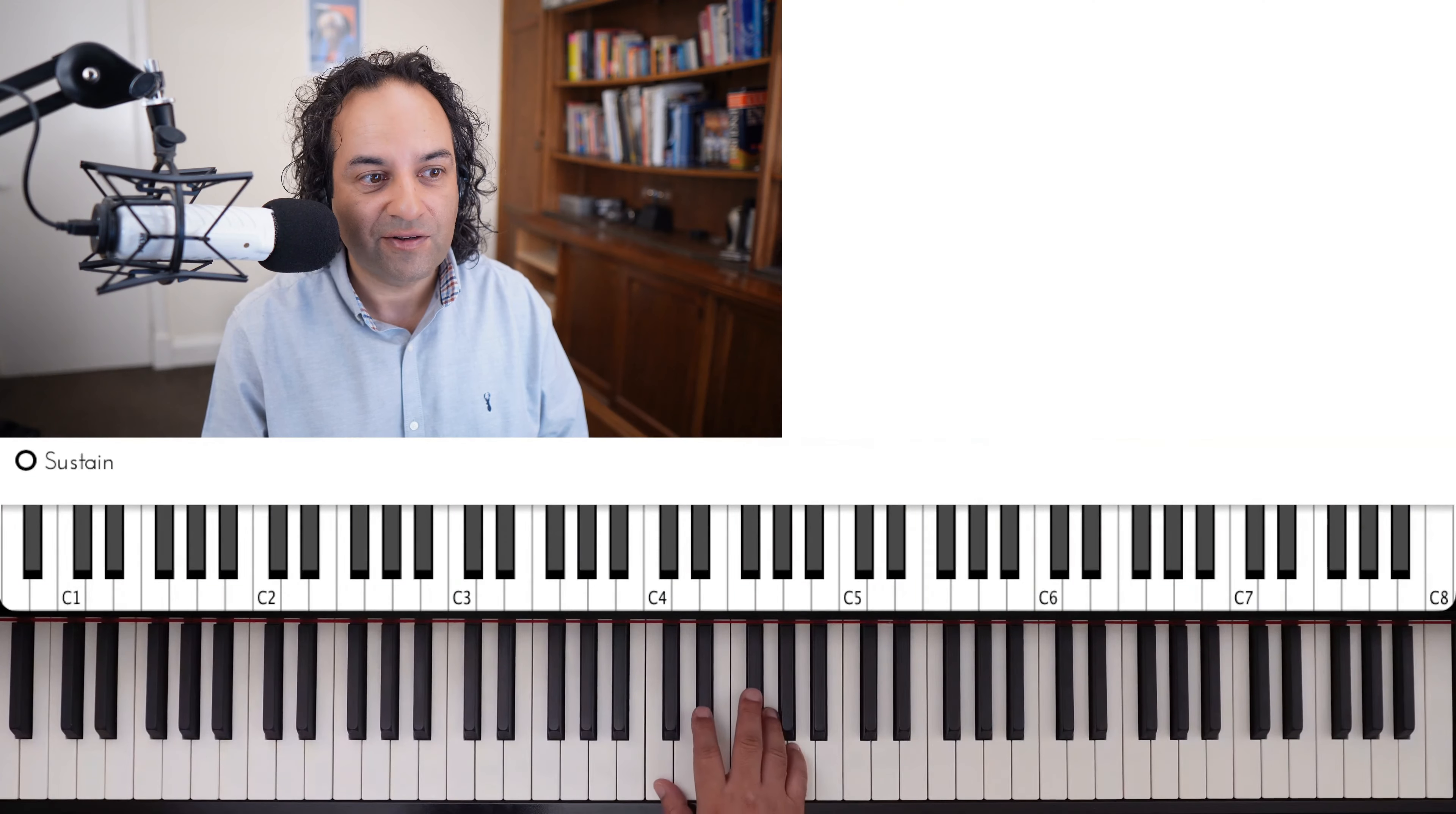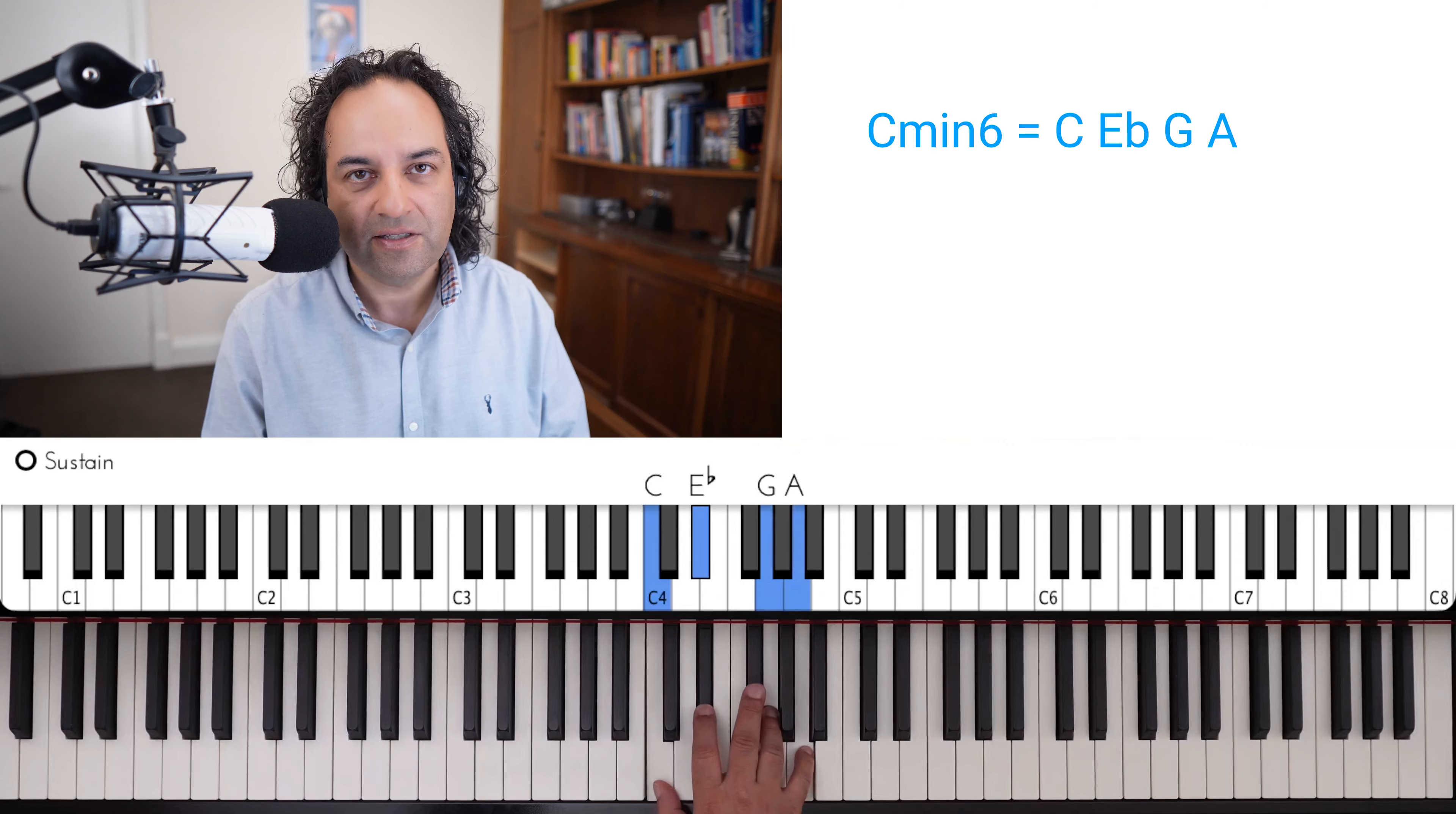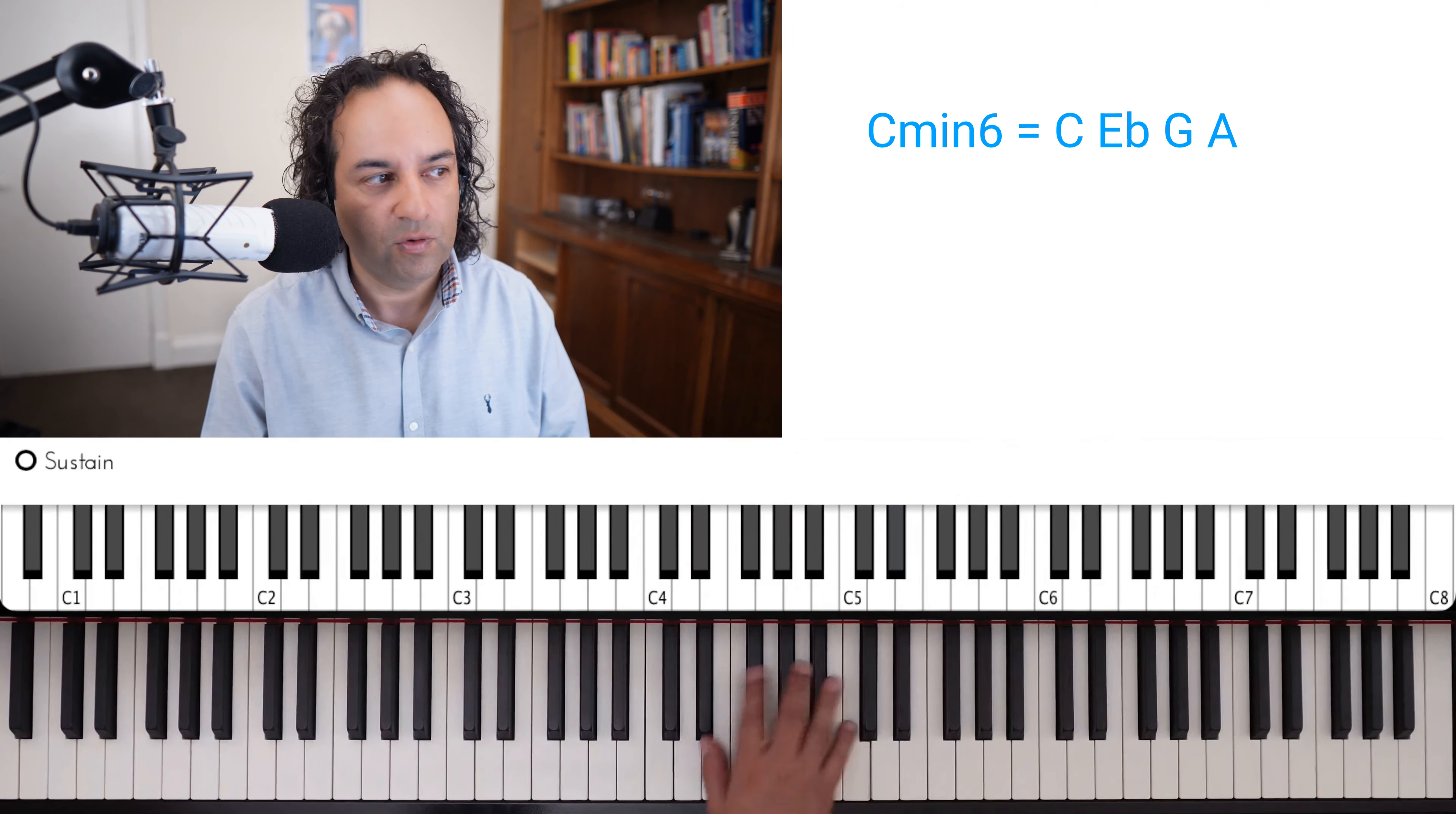Of course, the first thing to be aware of is how to find a minor six. Minor triad plus a whole tone above gives you a minor six chord. It's not a flat six. Some people think it's that. It's not. So be able to do that in different inversions, first of all.